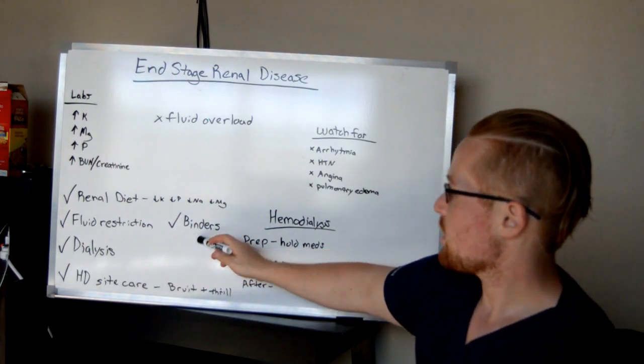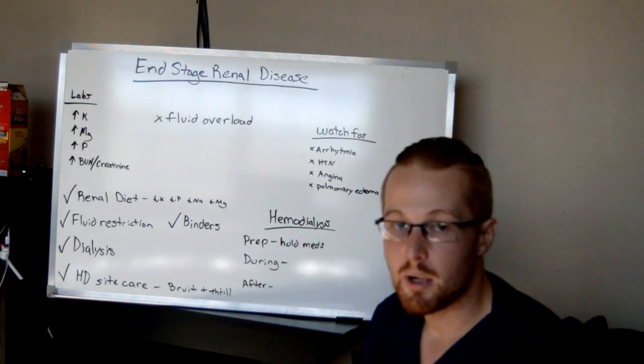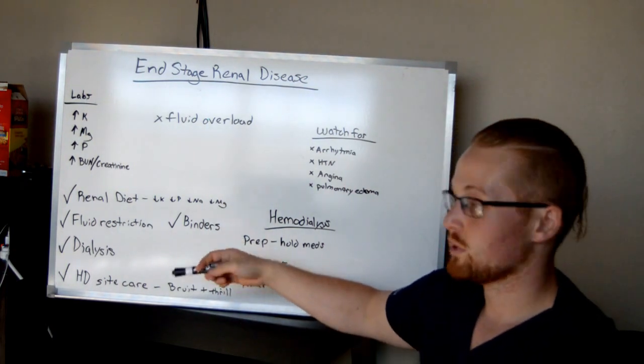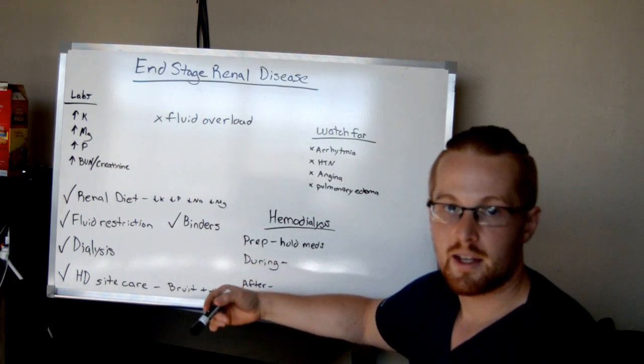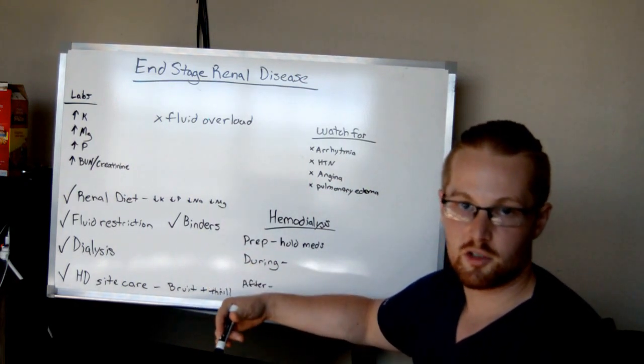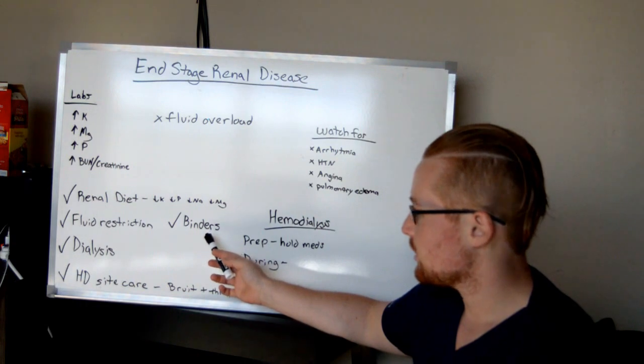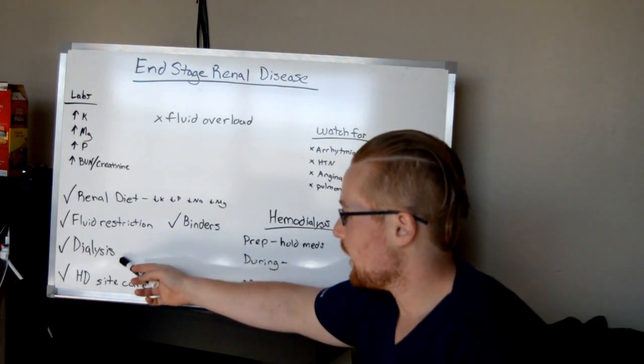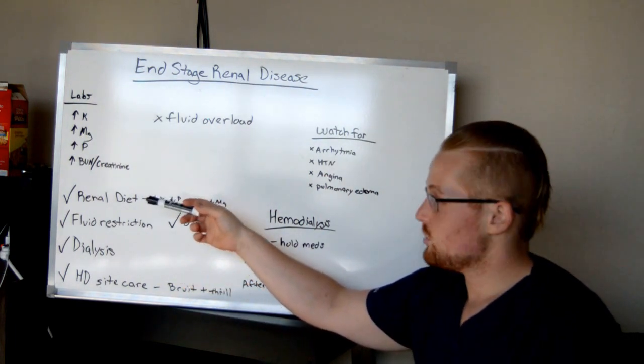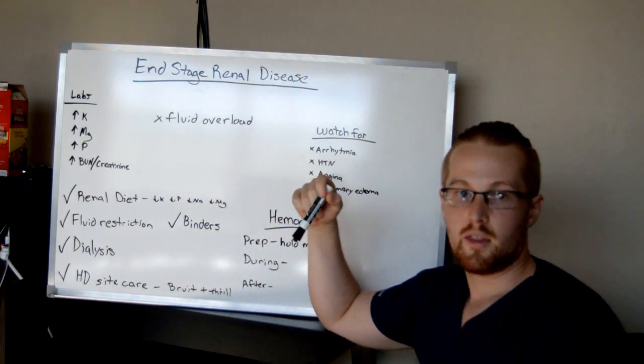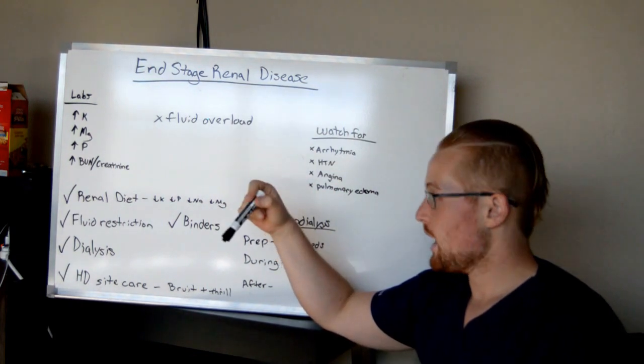You're also going to have medications that are binders, such as phosphorus binders. These are medicines that the patient will take with every meal and it binds with the phosphorus in the food so that instead of it going into the bloodstream, it is excreted in their defecation. And dialysis, what this is going to do is it's going to correct the electrolyte imbalances and it's going to pull out the fluids that the patient is no longer able to urinate out.